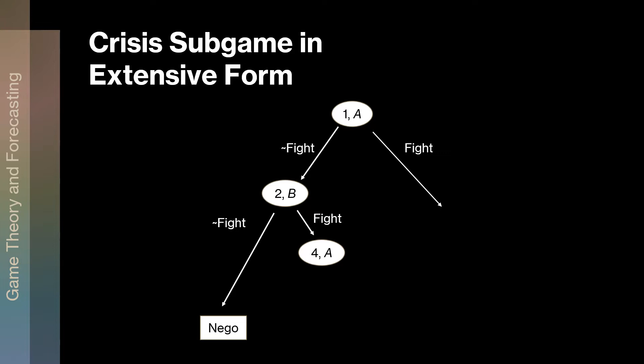At the second node, player B moves and player B has a choice of fight or not fight as well. If B chooses not to fight, then we go all the way down to our outcome of negotiate. So if there are demands on the table and both players decide they're not going to fight over this, we're going to negotiate. On the other hand, B could choose to fight, which would lead us to another node — node four.